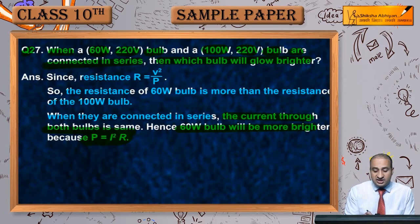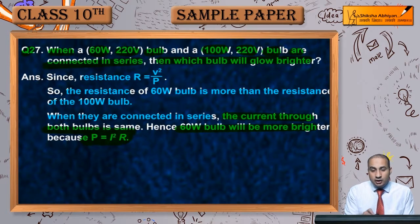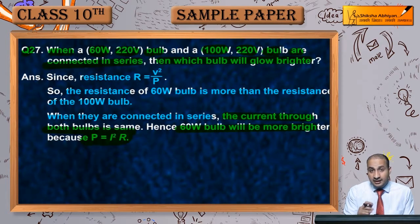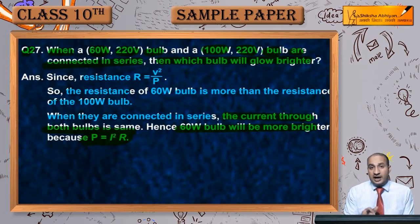Since the current is the same in series, power depends on resistance. The bulb with higher resistance will have more power dissipated and therefore more brightness — so the 60 watt bulb glows brighter.